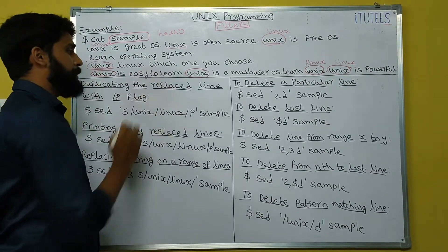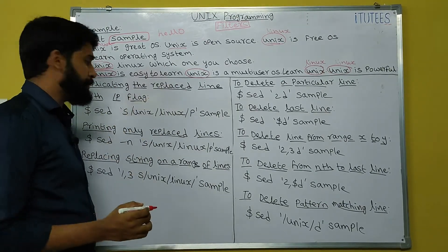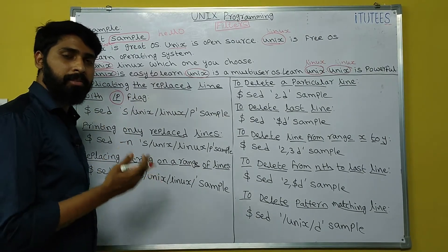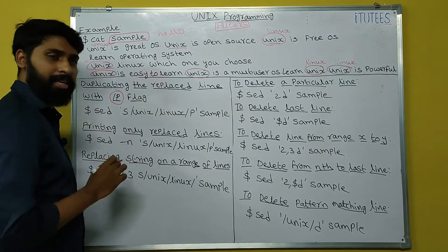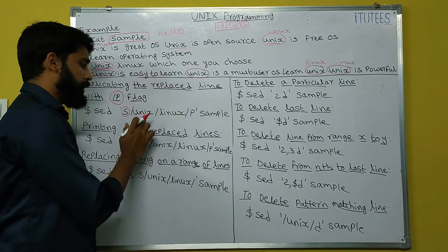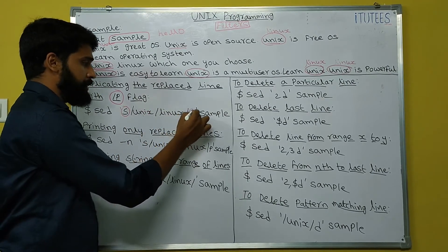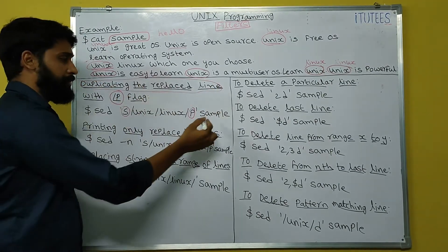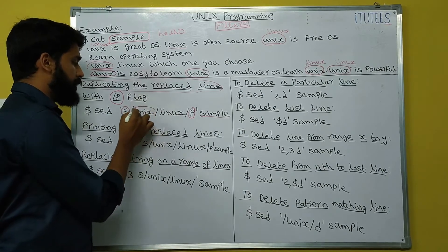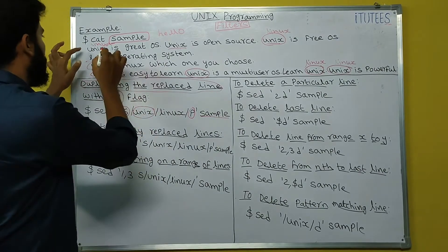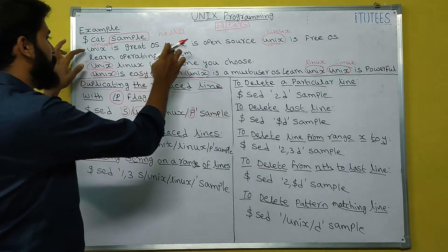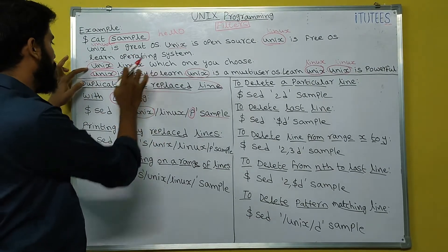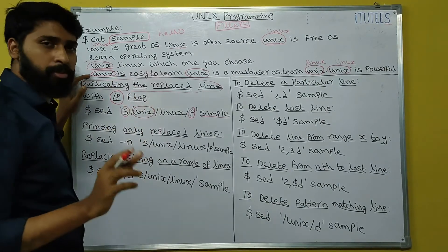Duplicating the replaced line with the /p flag: SED 's/unix/linux/p' sample. The 'p' flag causes the replaced lines to be printed two times. Lines where a substitution occurred are displayed twice; lines with no unix word are printed only once.